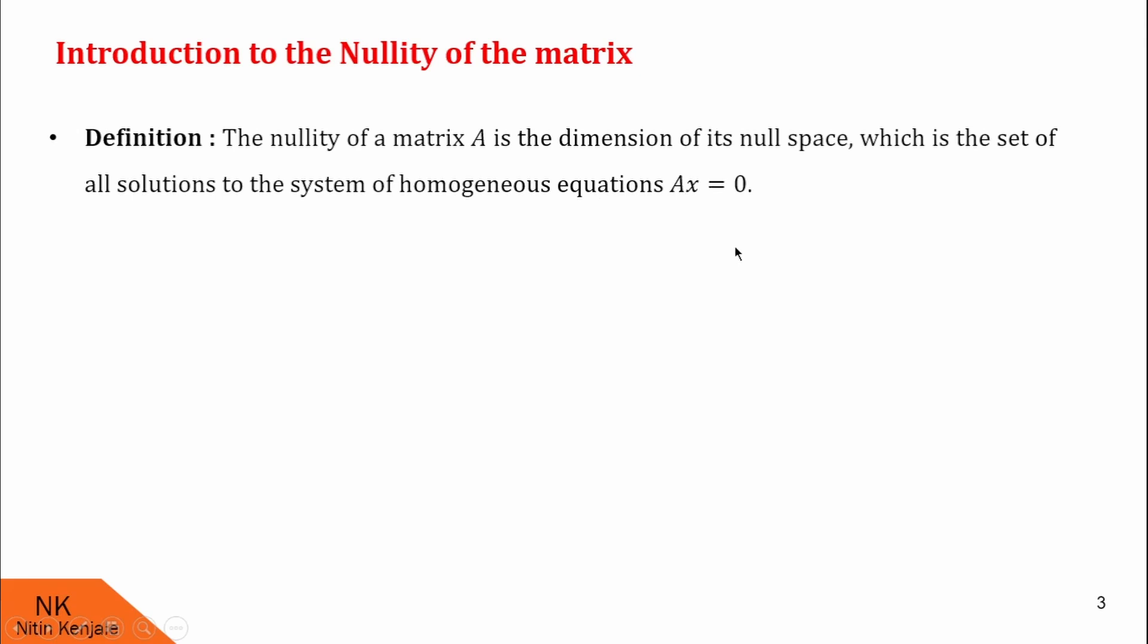To understand this, you first consider the system of homogeneous equations Ax equal to 0. Then determine the set of solutions to this homogeneous equations. That set is called as null space. Now, find the cardinality of this set of all generators of this null space. That cardinality is nothing but nullity of the matrix.